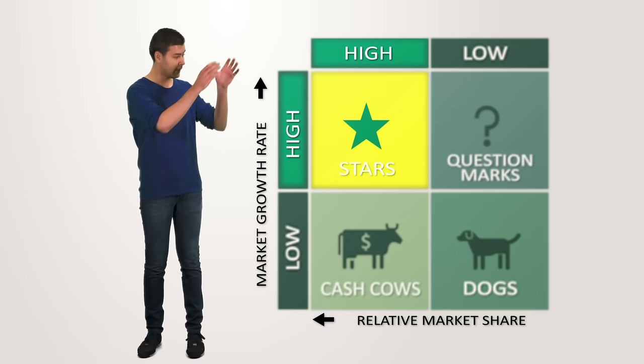If we move to the right, we see that Samsung also has quite some SBUs in the question marks quadrant. For these product lines, it will be important to carefully analyze which of these question marks have most potential to become stars, and should therefore get most of the cash that is being generated through the cash cows.